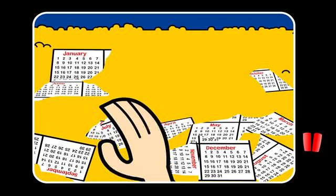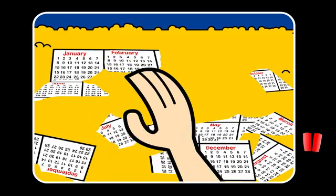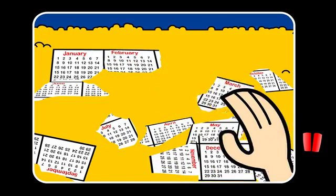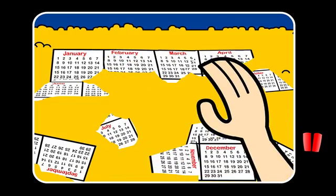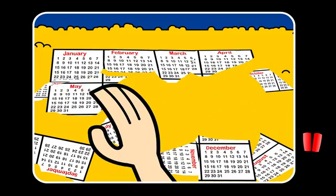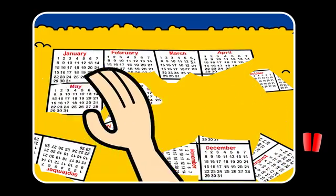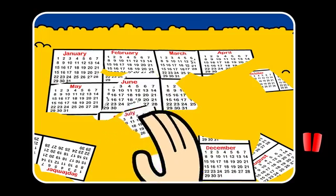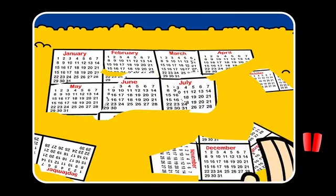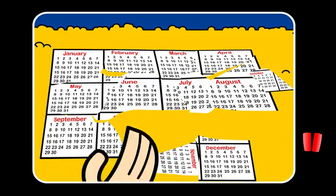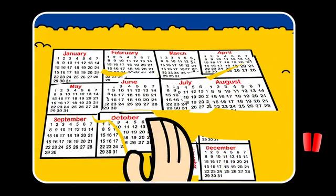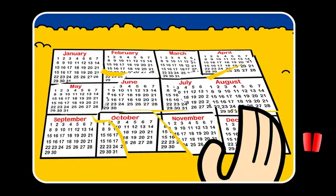January, February, March, April, May, June, July, August, September, October, November and December.